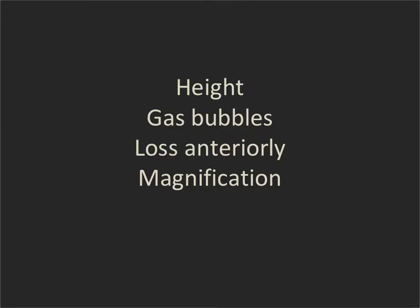There are four things that can be helpful to us. Sometimes all four are visible in any one patient, sometimes just one or two, and sometimes it's impossible to tell from the lateral chest radiograph — but that's a minority of times. The first is the height of the hemidiaphragm. The second is the presence or absence of large bubbles of gas within the bowel. The third is the loss of the diaphragm anteriorly, and the fourth is magnification of the hemithorax. There is a fifth — looking at the fissures — but that tends to be trickier, so it's not included here.